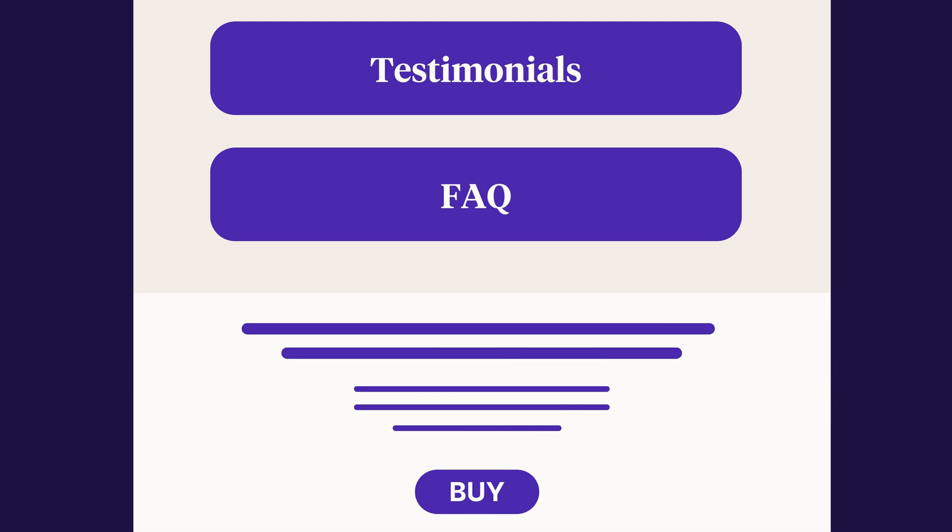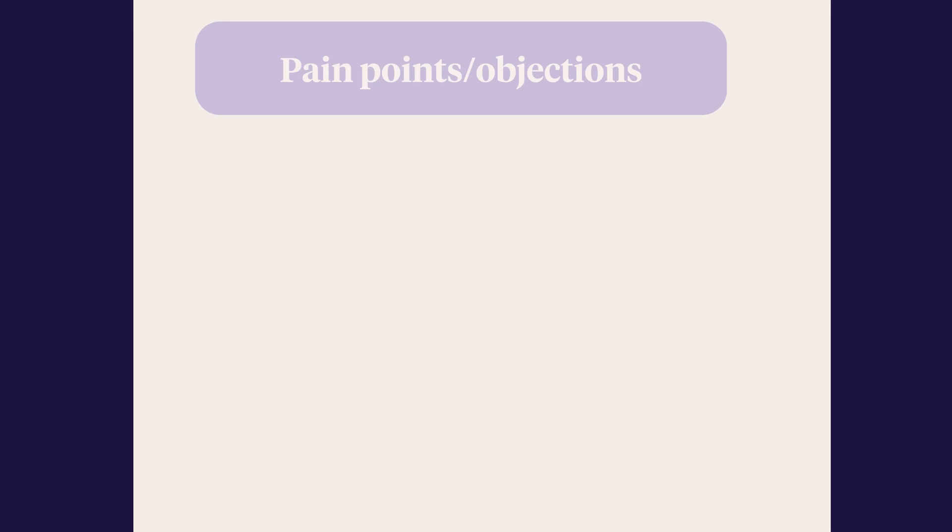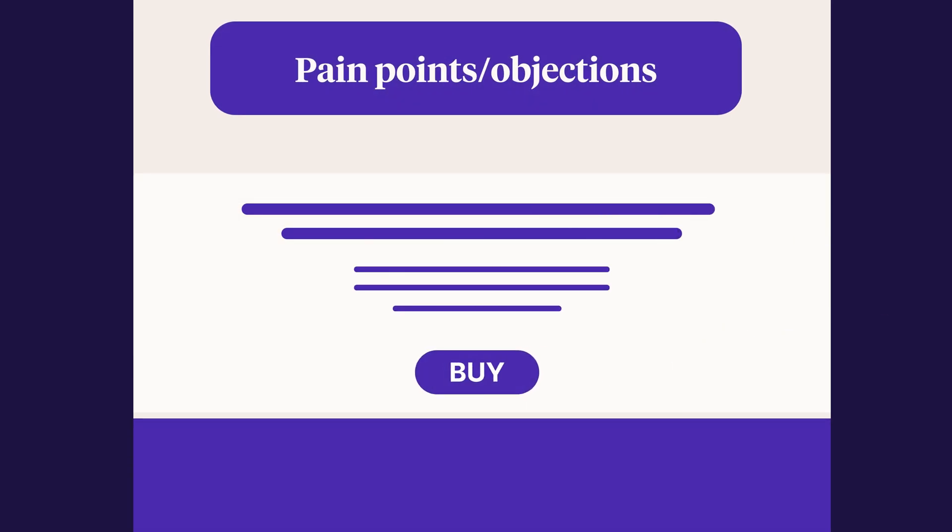Next on the page, you could address specific pain points or common objections, followed by another CTA. It's okay to repeat this a few times all the way down the page. The idea is that if at any stage of reading the visitor becomes convinced, they don't have to scroll all the way back up or all the way down to take action — they can do it right there. With that in mind, it also makes sense to include a CTA all the way at the bottom of the page to capture visitors who make it that far.